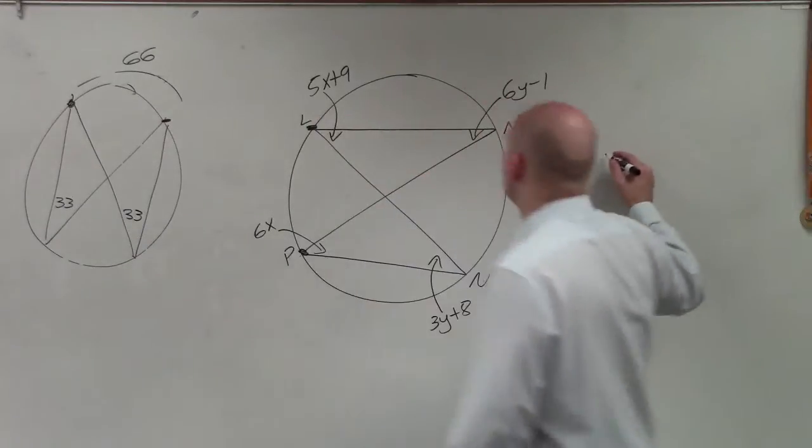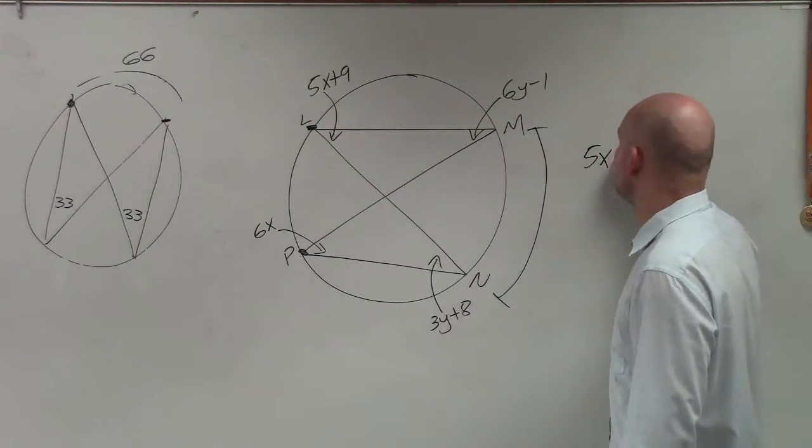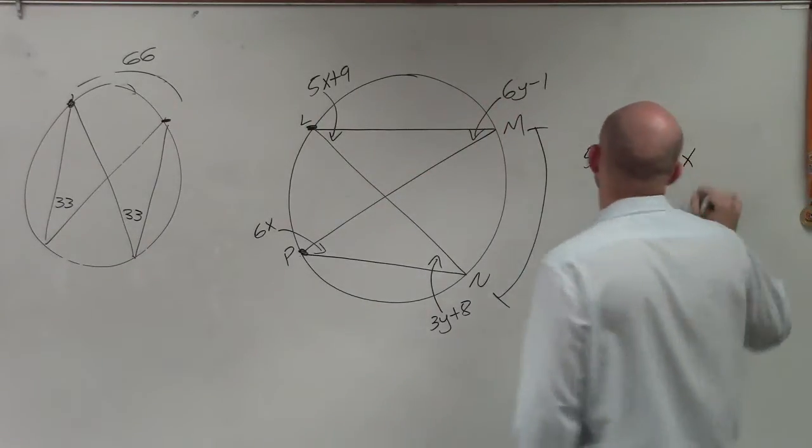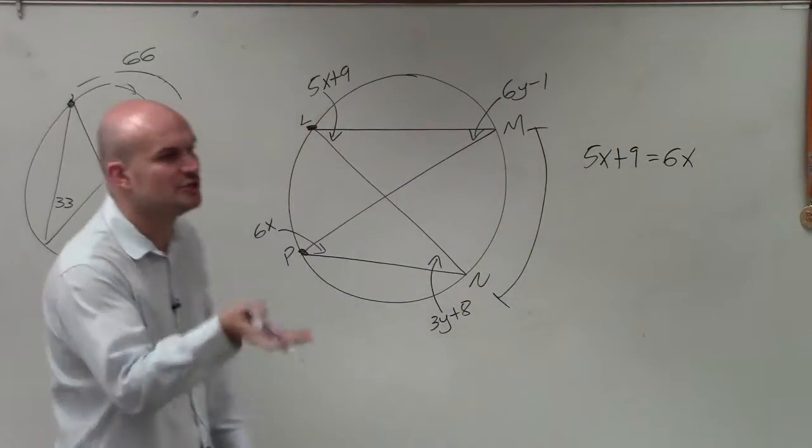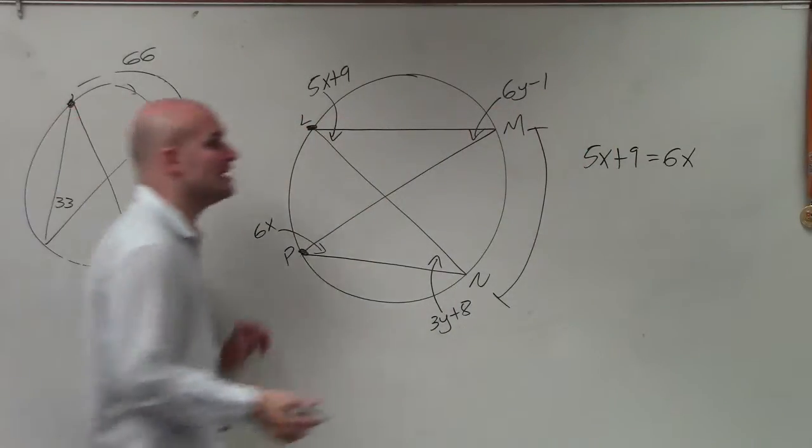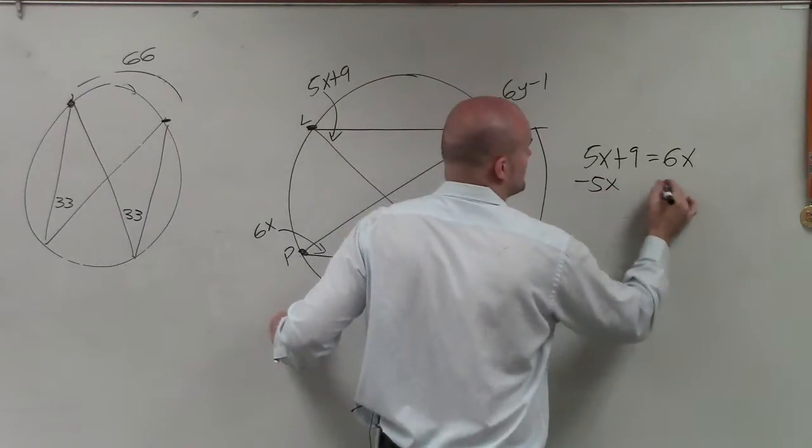So therefore, we can say that they are now equal in measurement. So 5x plus 9 is equal to 6x. Now all I simply need to do is solve for x. So I subtract 5x on both sides,